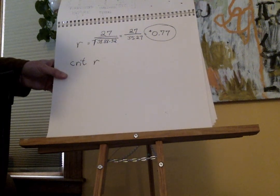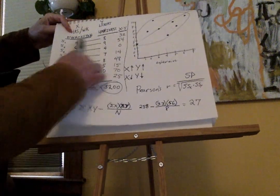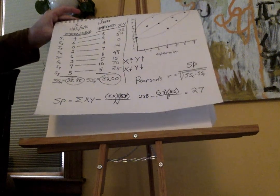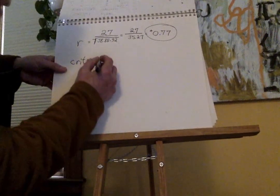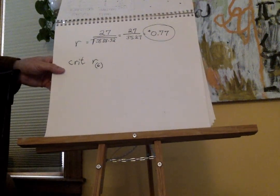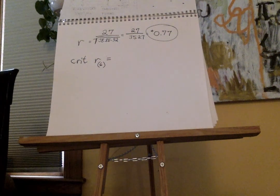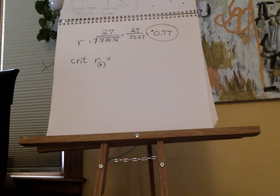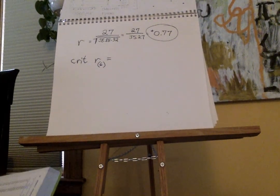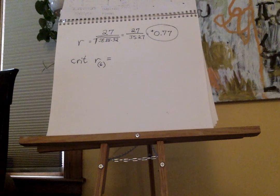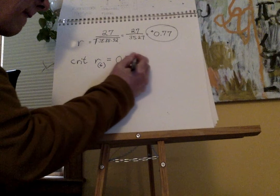The degrees of freedom for Pearson's r is not n minus 1 — it's n minus 2. The n here is the number of pairs, or the number of points on your scatter plot. We have 8, so degrees of freedom = 8 minus 2 = 6. I'm going to look in table B6 for the critical value. For 6 degrees of freedom at alpha = .05, the critical value is .707. Our value of .77 surpasses this.